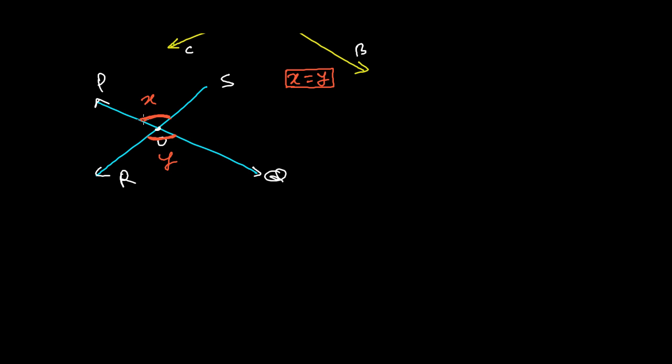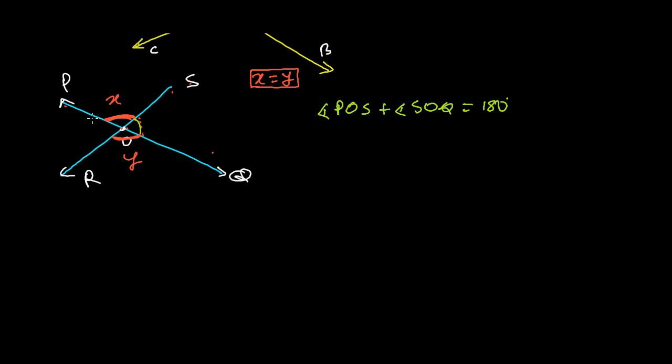So here angle X, which is angle POS, and this is angle SOQ - I'm talking about this angle. So I'm going to say here angle POS plus angle SOQ is 180 degrees. And the reason for this is this is a straight line. This is a straight line, and the angle formed in a straight line is 180 degrees, or you can use the concept of linear pair. These two are linear paired angles and the sum of the linear pair is 180 degrees. Linear pair angles.